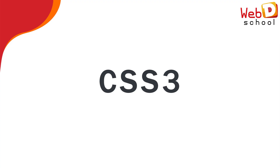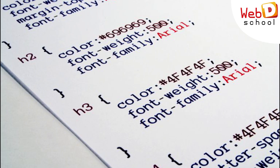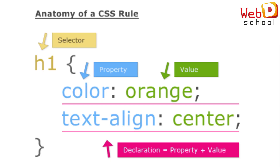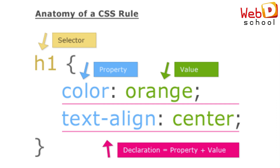If the client has a requirement saying that the button has to be blue in color, or the paragraph has to be a certain font size, font family, or font weight has to be bold — all these things can be achieved through CSS. Through CSS only, we can style the document which we have created using HTML.